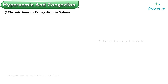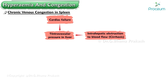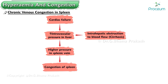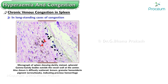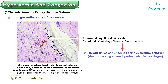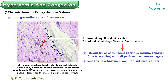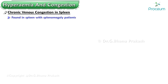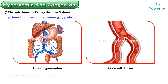In chronic venous congestion of the spleen, increased intravascular pressure from cardiac failure or intrahepatic obstruction — for example, cirrhosis — generates higher pressure in the splenic vein. The organ becomes enlarged and tense, and the cut section oozes dark blood. In long-standing cases, diffuse splenic fibrosis develops, as do iron-containing fibrotic and calcified foci of old hemorrhage called Gamma-Gandy bodies — small yellow-brown or rust-colored foci found in the spleen with splenomegaly due to portal hypertension or sickle cell disease.